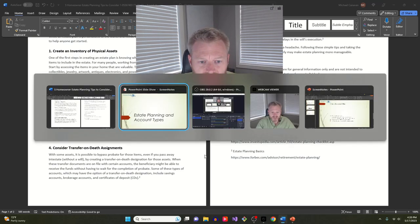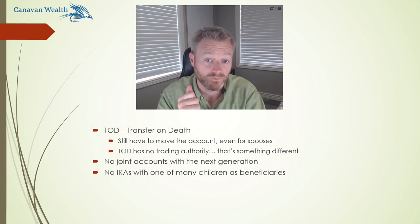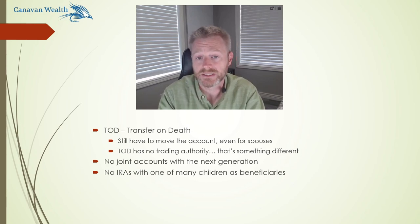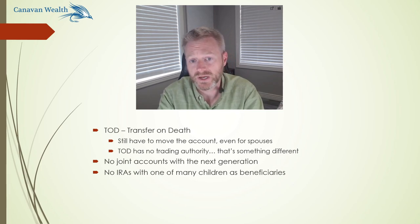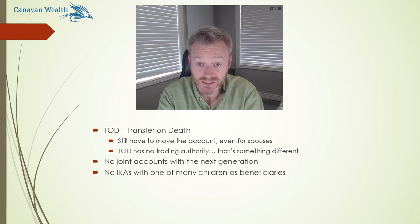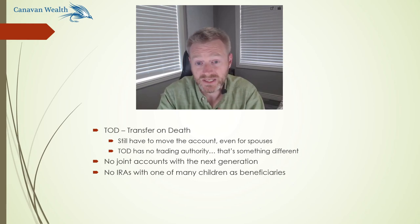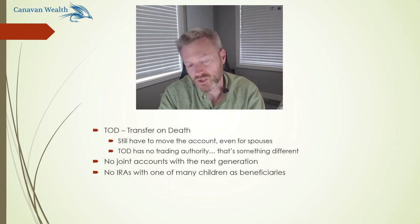I've got a little slide here I want to go through. One of the most important things to understand about transfer on death accounts is that they're fantastic and they usually occur quickly. The process is: someone passes away, the beneficiaries — or say the joint owner of that account, like the spouse — notifies us that the person has passed away. We then freeze the account because we're not allowed to do any transactions on an account that has a deceased owner. We then require a death certificate, and once that comes in, we start the process of opening a new account for the new owners and transferring those assets.